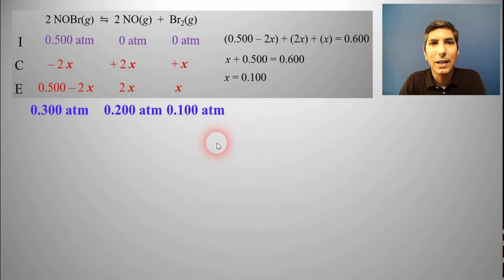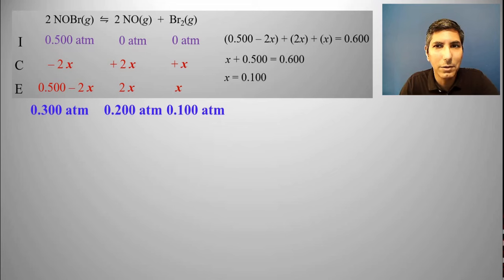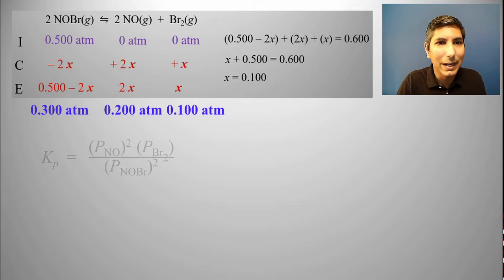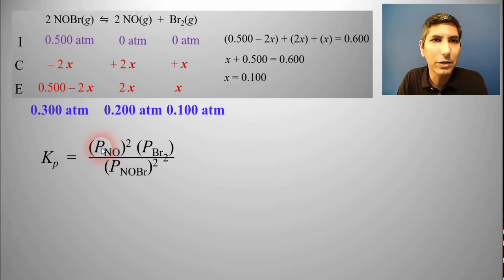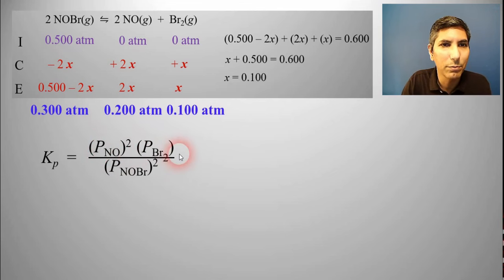The problem also asks us to calculate Kp at this temperature. We write the expression for Kp — products over reactants raised to the power of the coefficients, written with P's for partial pressure. It's the pressure of NO squared times the pressure of Br2, all over the pressure of NOBr squared. Plugging in: NO is 0.200 squared, bromine is 0.100, and NOBr is 0.300 squared. Evaluating on your calculator — 0.2 squared times 0.1 divided by 0.3 squared — gives an answer of 4.4 times 10 to the negative 2.